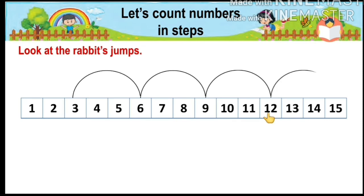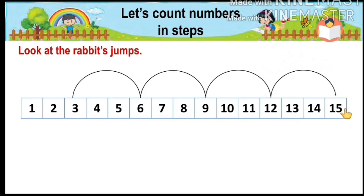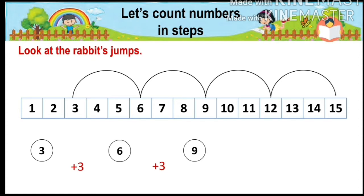Again the rabbit jumps to the next number, fifteen. We count one, two, three steps forward and we get fifteen. Here we started from the number three. Then adding three steps we get six, then adding three steps we get nine, again counting three steps forward we get twelve, again counting three steps forward we get fifteen.